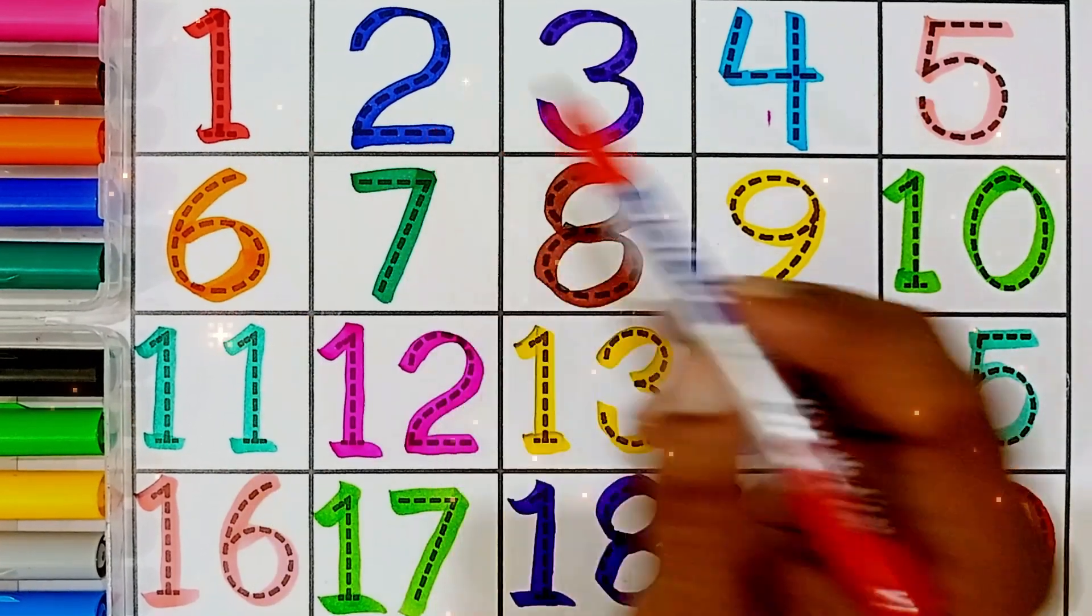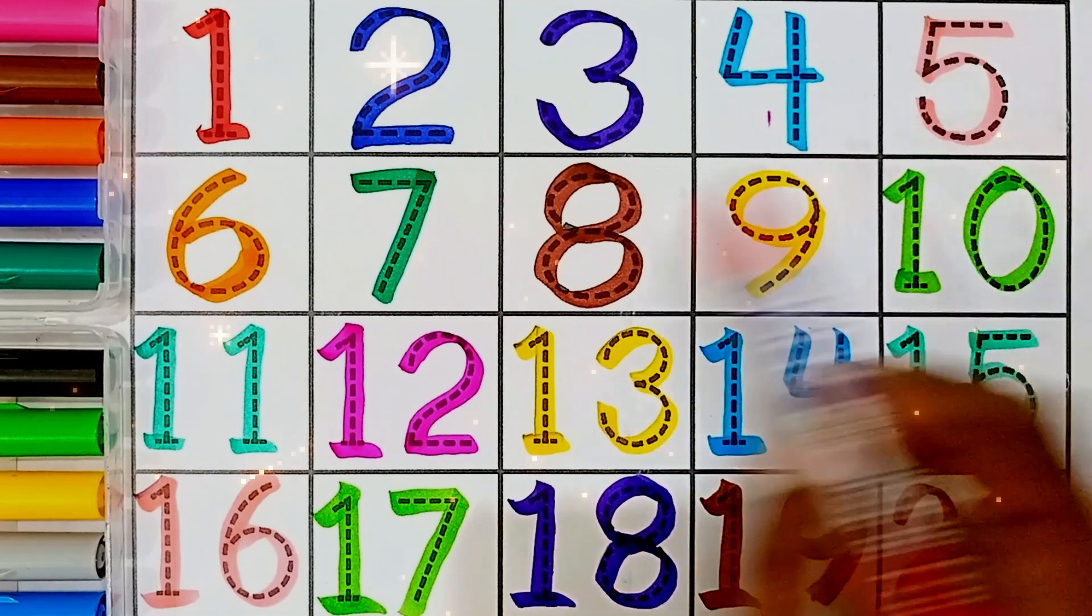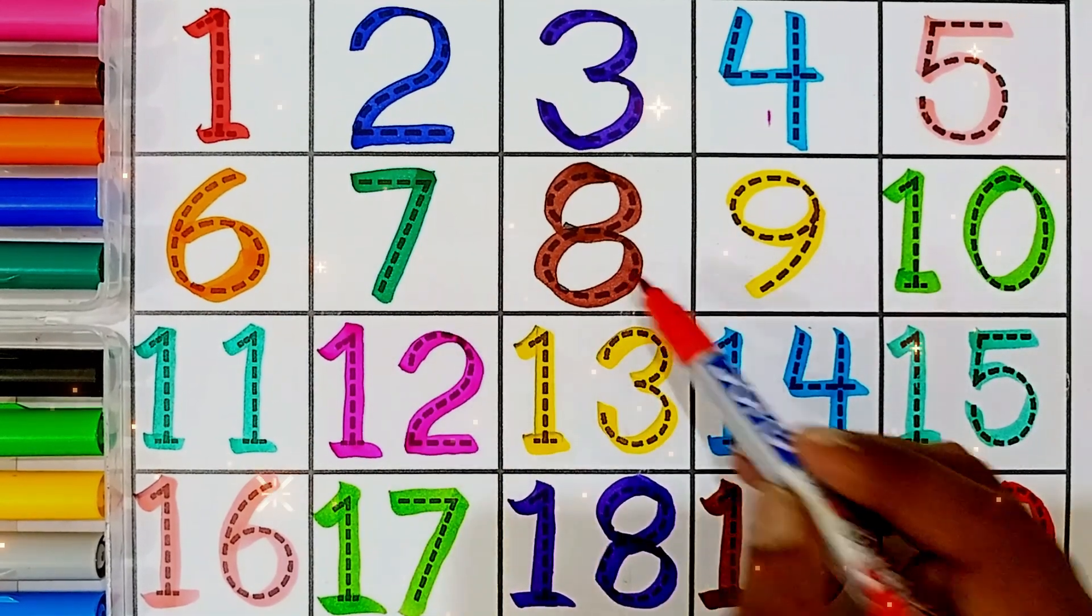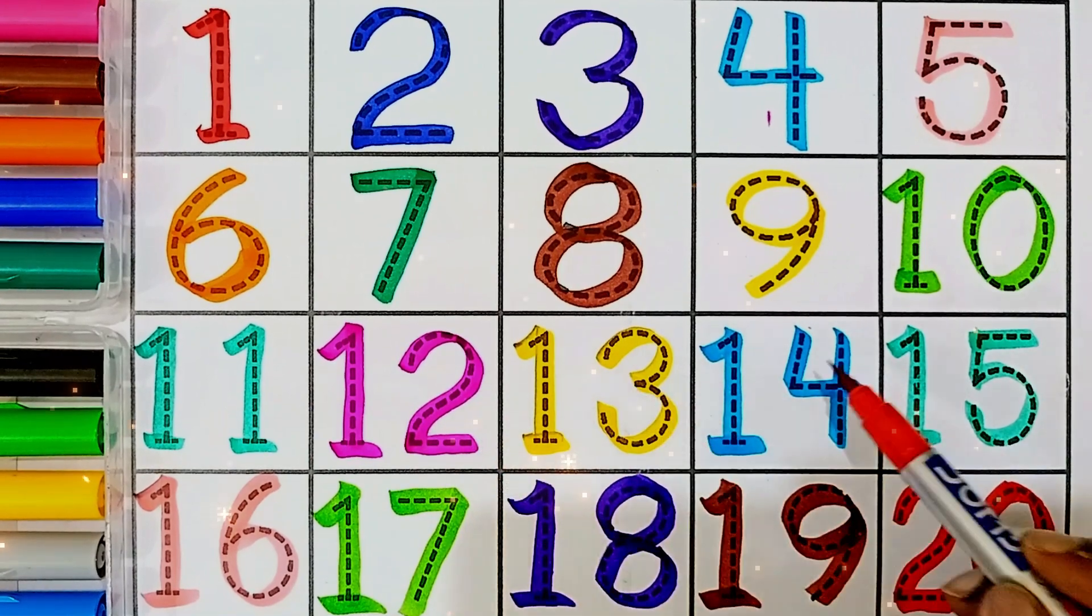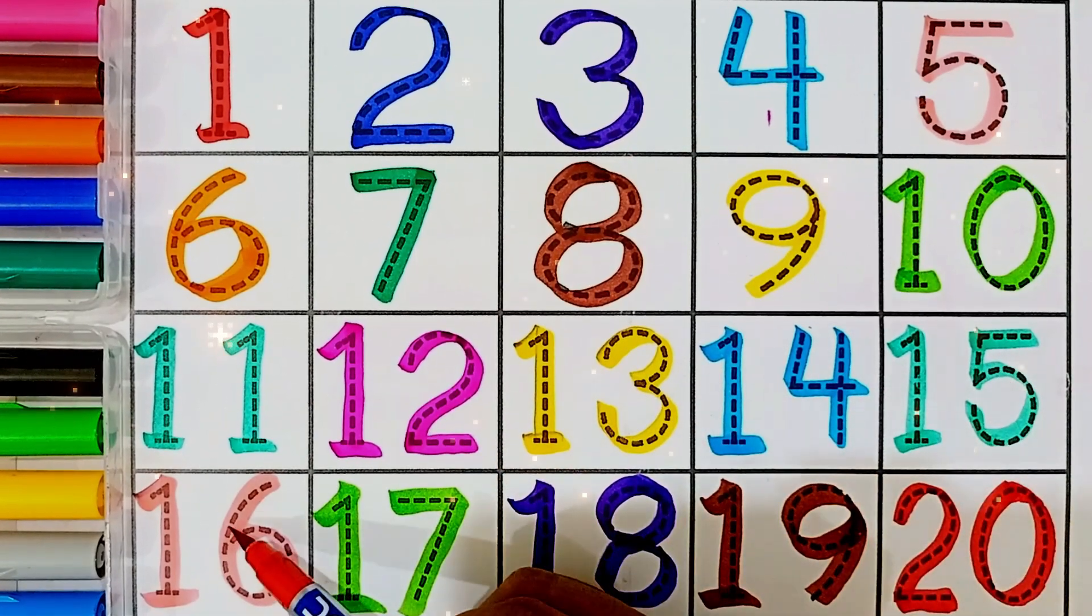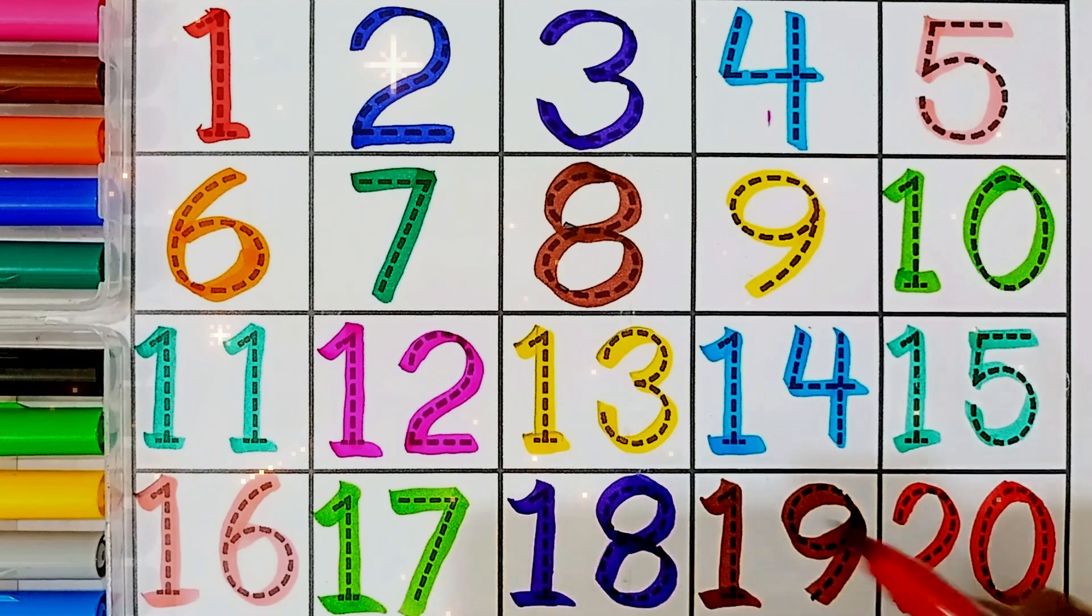One, two, three, four, five, six, seven, eight, nine, ten, eleven, twelve, thirteen, fourteen, fifteen, sixteen, seventeen, eighteen, nineteen, twenty.